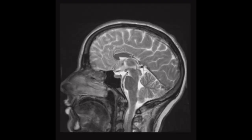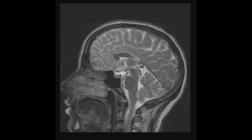Now going back to our patient — a small corpus callosum. We call this partial absence of the corpus callosum. Now we're going to look at the pituitary gland. When we see this finding, we look for other midline anomalies. Sometimes patients will have a small pituitary gland, but this patient has a normal size pituitary gland.